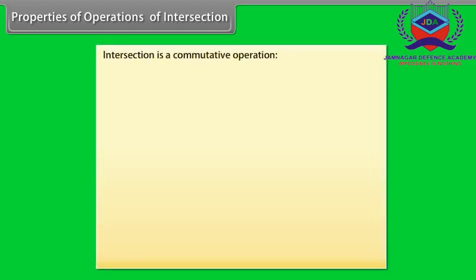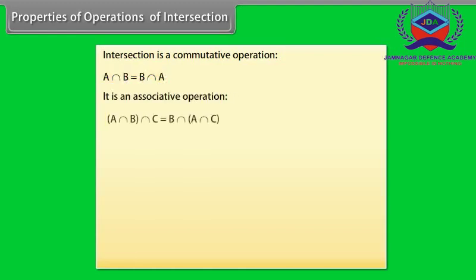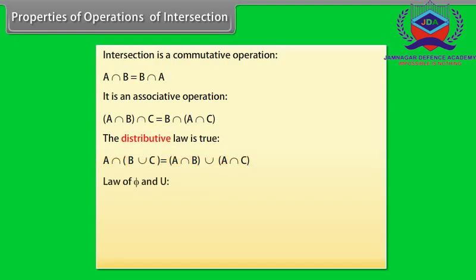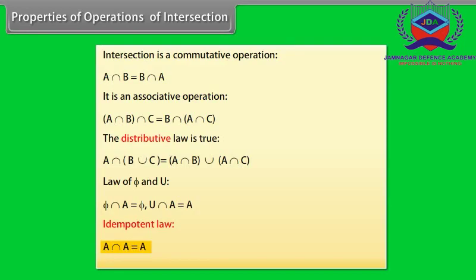Properties of operations of intersection. Intersection is a commutative operation: A intersection B is equal to B intersection A. It is an associative operation: A intersection (B intersection C) is equal to (B intersection A) intersection C. The distributive law is true: A intersection (B union C) is equal to (A intersection B) union (A intersection C). Law of phi and U: phi intersection A is equal to phi; U intersection A is equal to A. Idempotent law: A intersection A is equal to A.